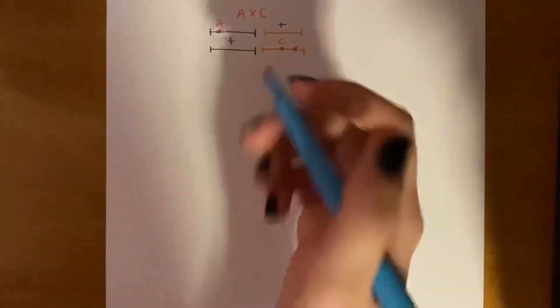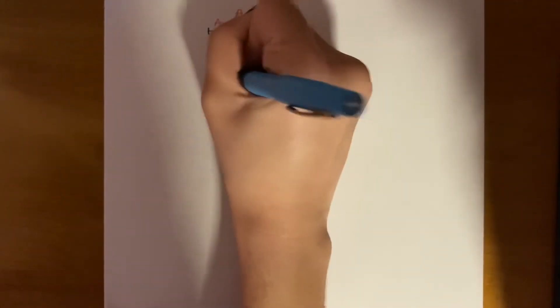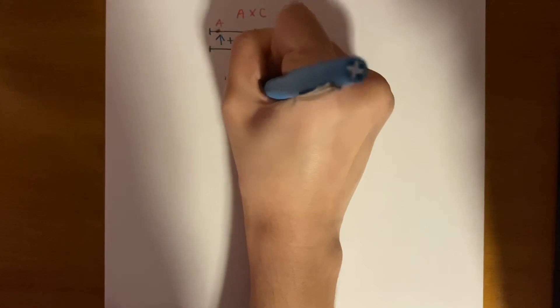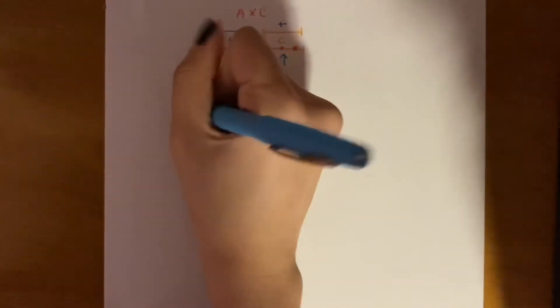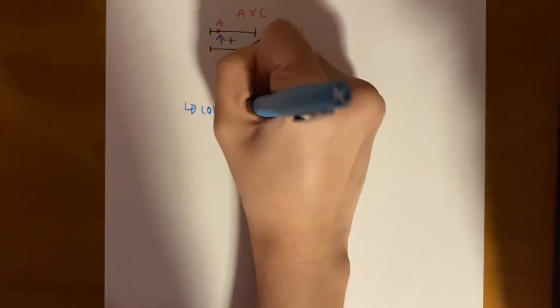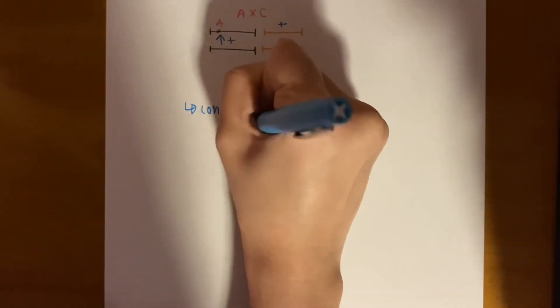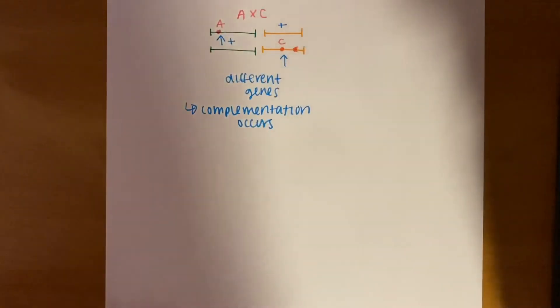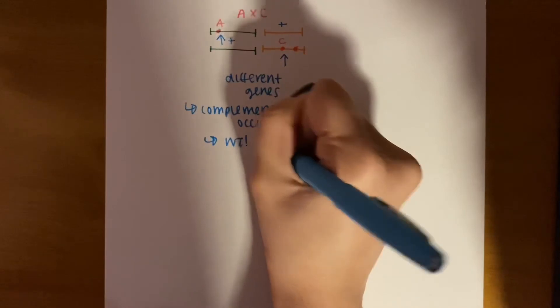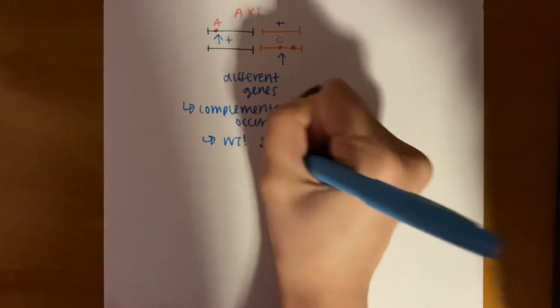So, as you can see, the mutant alleles are on different genes. So, here we would say that complementation does occur. And the wild-type phenotype would recover. So, we would have a blue flower.